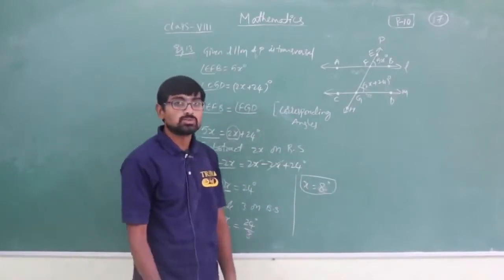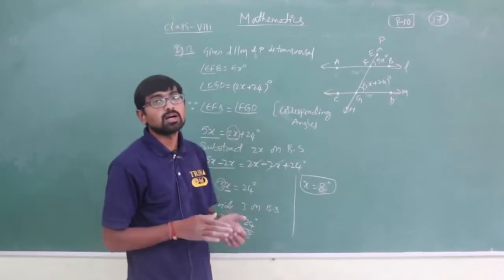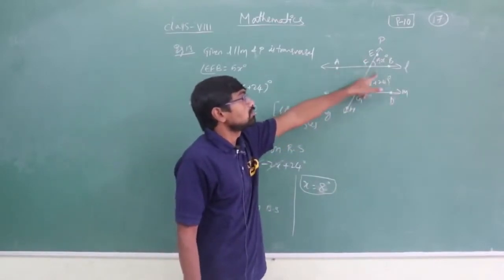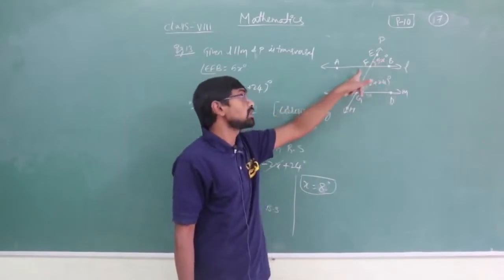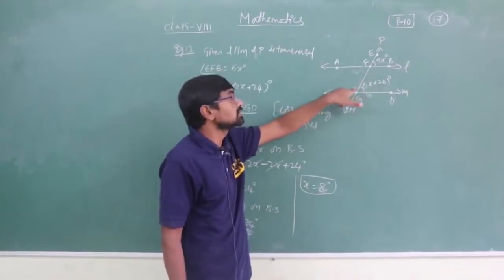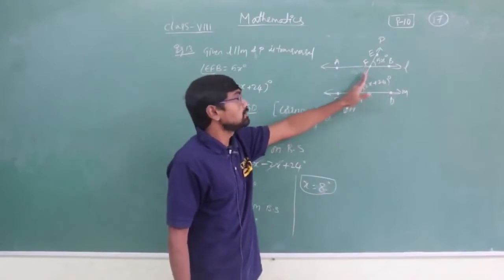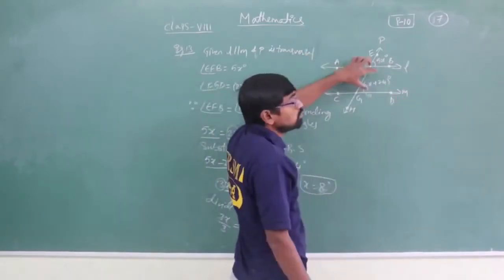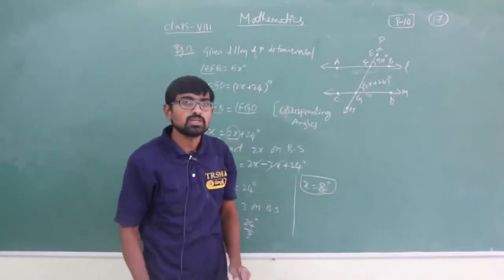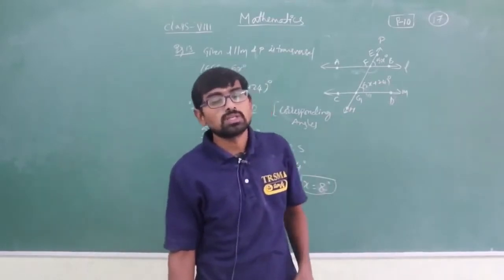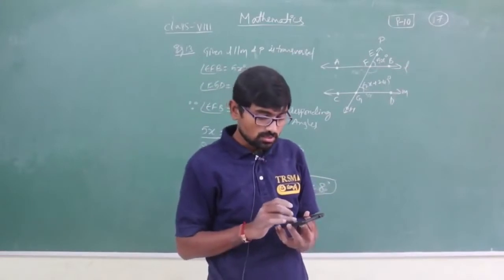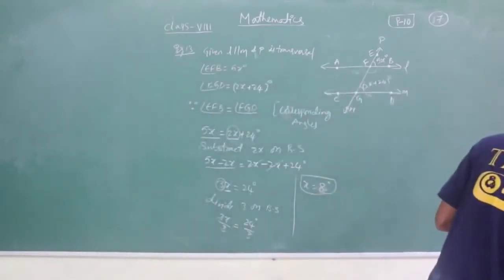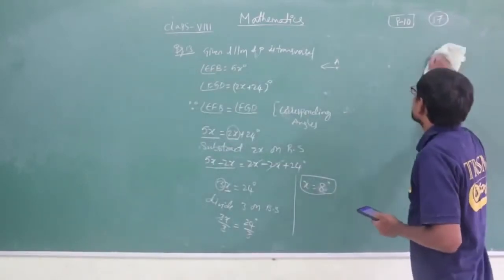Here 3 is multiplying the variable, so use the multiplicative inverse of 3, that is 1 by 3 — meaning we divide. Divide 3 on both sides: 3x divided by 3 equals 24 divided by 3. So x equals 8. This is how you find the value of x when given in the form of angle sum properties with parallel lines and a transversal. We also have vertically opposite angles, alternate interior angles, alternate exterior angles, co-interior angles, and corresponding angles.